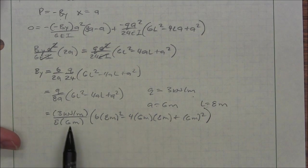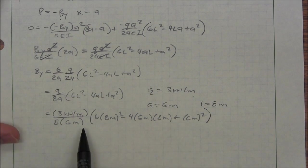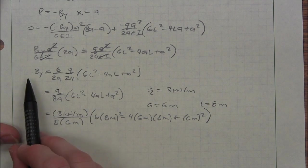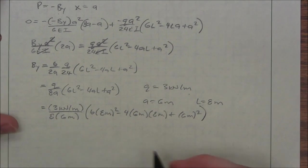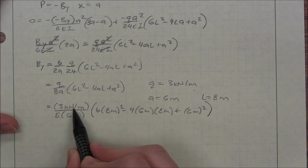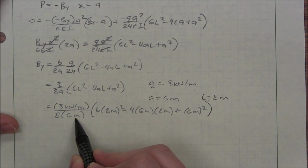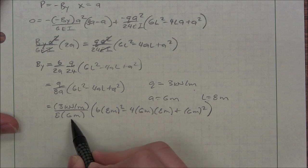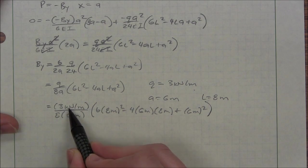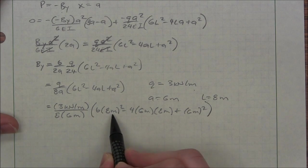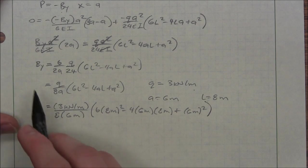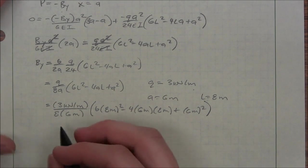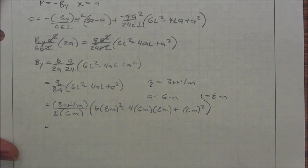So usually at this point I will take a look at our units to make sure that it is going to, in fact, come out to the units of a force. Otherwise, I've made a grave error and must be punished. So we've got kilonewtons over meters, over meters again, so that's kilopascals actually. But kilonewton over meters squared times, these are all meters squared, which will just result in kilonewtons, which is the units of force. So good on me. I do not receive a punishment.